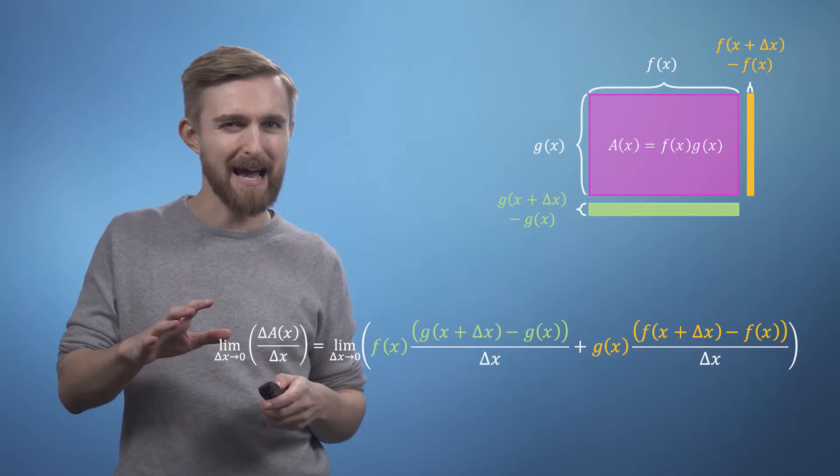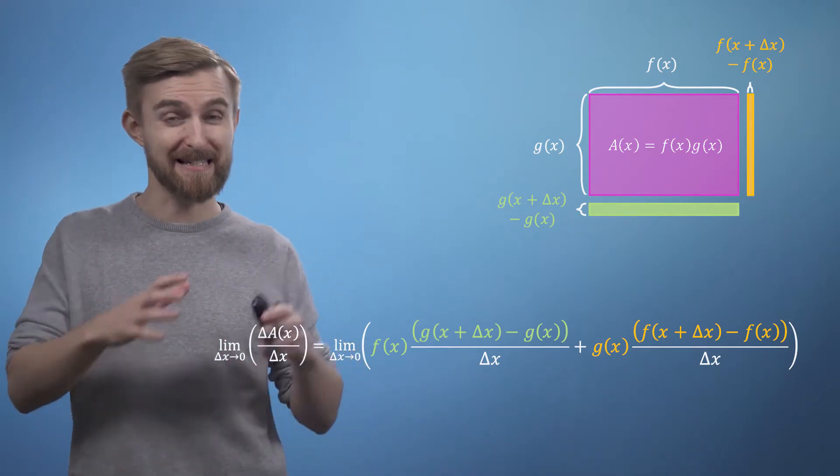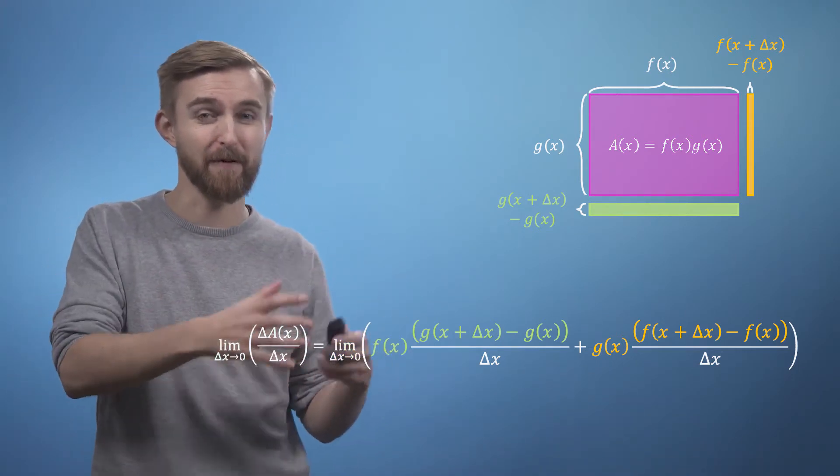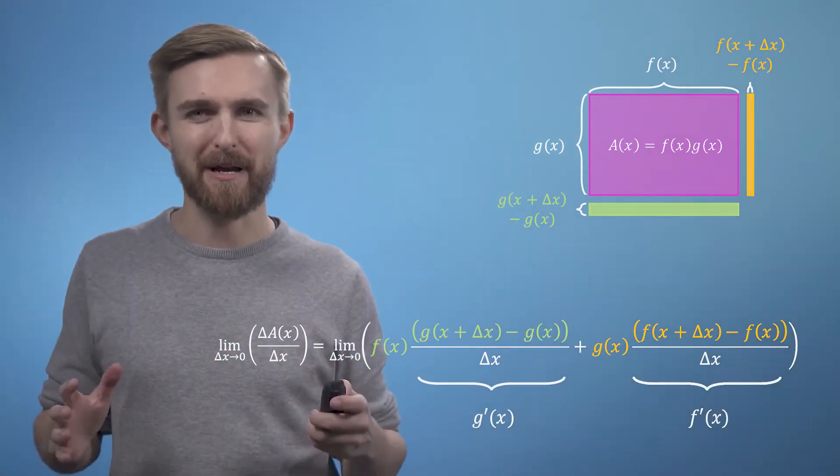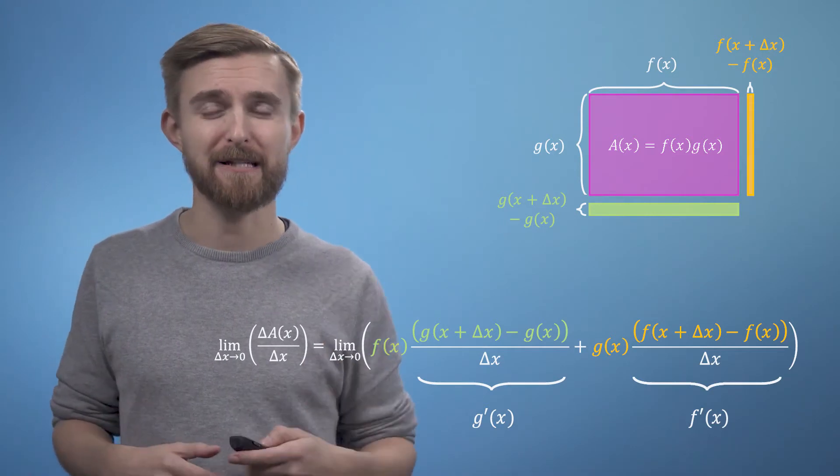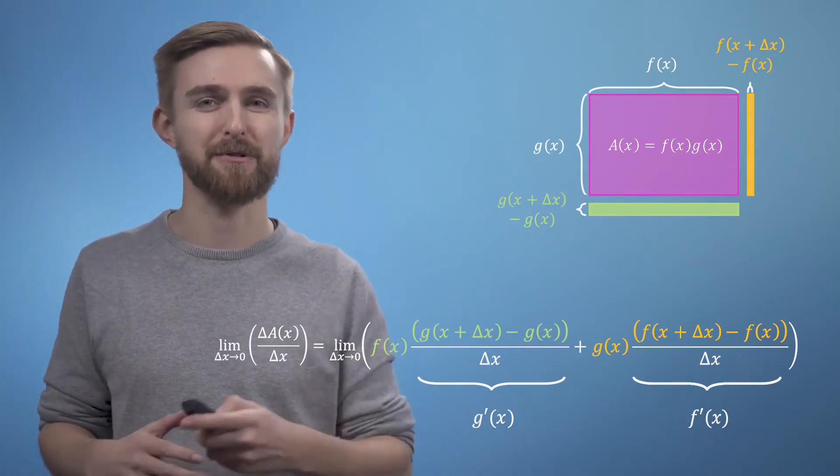What I hope you can see now, is that the first part contains the definition of the derivative of g of x, and the second part contains the derivative of f of x. Which means that we are now ready to write down our final expression for the derivative of a with respect to x.